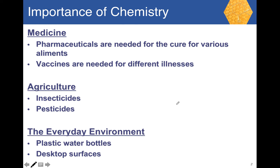Let us look at the importance of chemistry. Chemistry is all around us. For example, in medicine when you get ill and go to the doctor, you are typically prescribed a pharmaceutical that's produced using chemistry. Vaccines — we've heard a lot about vaccines these days, especially with COVID-19. That is chemistry in action, trying to develop vaccines.